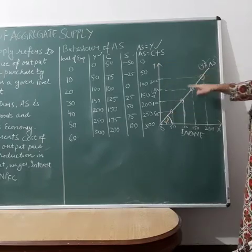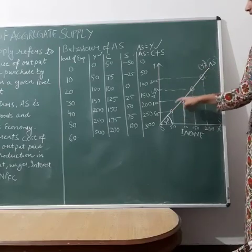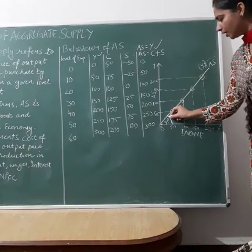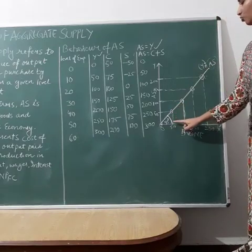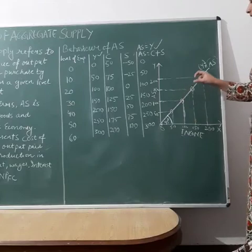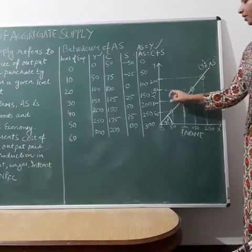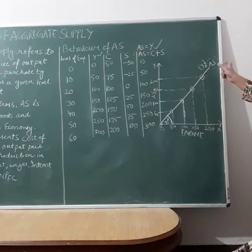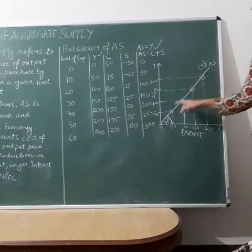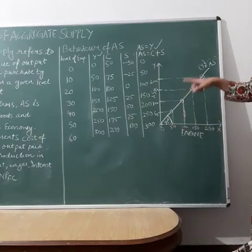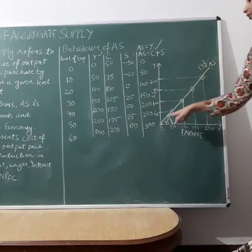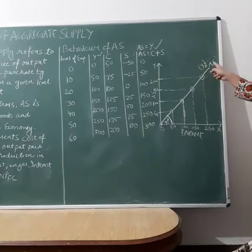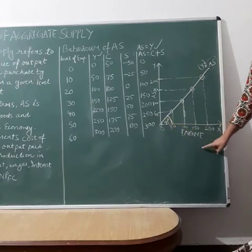This line divides the 90-degree axis into two equal parts, making it a 45-degree line. It is 45 degrees because at each and every point on the aggregate supply curve, income and aggregate supply are equal to each other. When drawing this curve, make sure it is exactly 45 degrees, otherwise the examiner may mark it wrong.